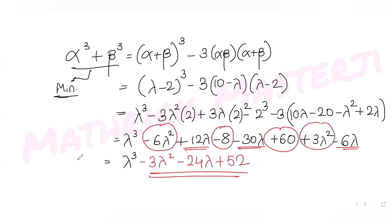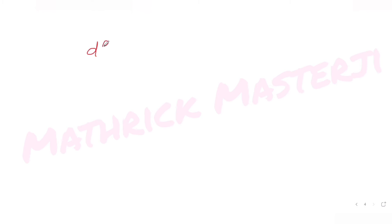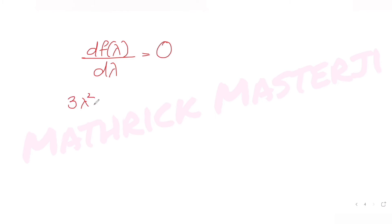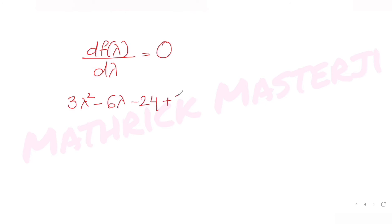Let's call this f(λ). To minimize it, I use the concept of maxima and minima: the derivative of f with respect to λ must equal zero. Taking the derivative: f'(λ) = 3λ² - 6λ - 24 = 0, since the derivative of the constant 52 is zero.